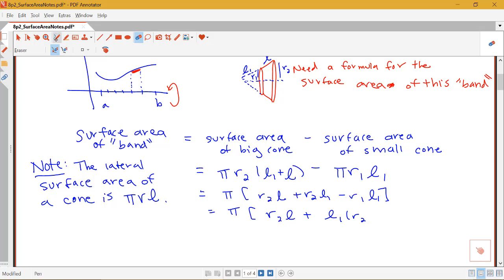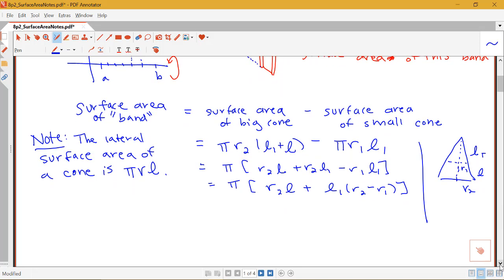And what I'd like to do is rewrite this L1 times R2 minus R1 in terms of just this L. And it turns out that if we use similar triangles, we can rewrite this part here into something that's a little bit more helpful. So if I think about the triangles that I have going on here, this part here, the smaller part is L1. The part on just the bottom part here of this triangle would be L, this would be R2, this would be R1, so I could write that L1 over R1 would be equal to L plus L1 over R2.